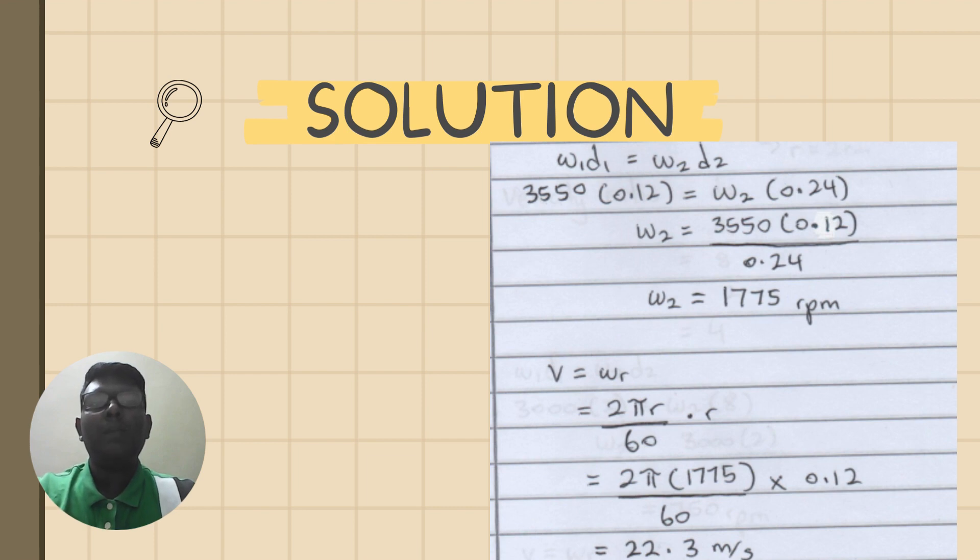...of the compressor times the radius of the compressor. The speed rate of compressor uses the formula of 2π times speed rate of the compressor over 60, and the compressor's speed rate times the radius of the compressor gives you the value of 22.3 meters per second.